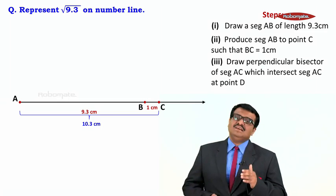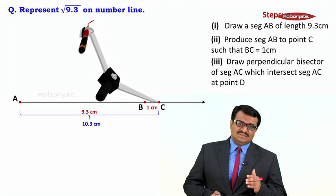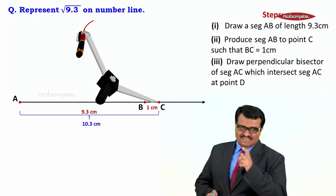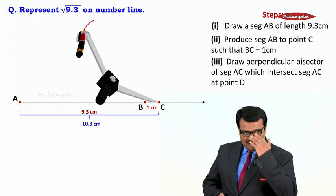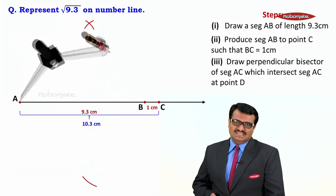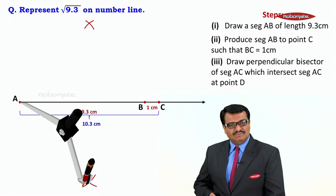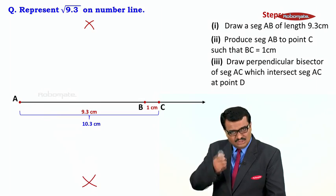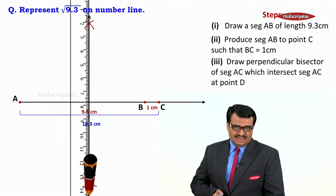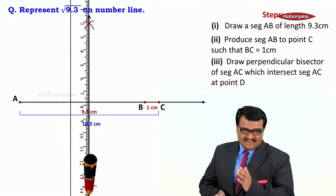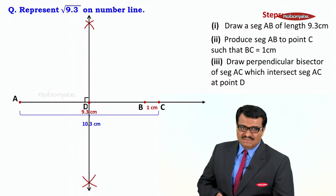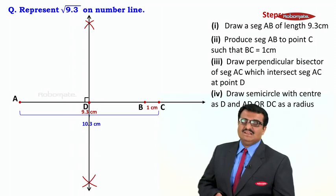For drawing the perpendicular bisector, we keep a compass and draw an arc — taking a measure more than half of segment AC — drawing an arc above and an arc below. Then we keep the compass at A also and finish the arc. After finishing the arcs, we join the two arc intersections with a scale. Wherever this line cuts AC, that point we take as D.